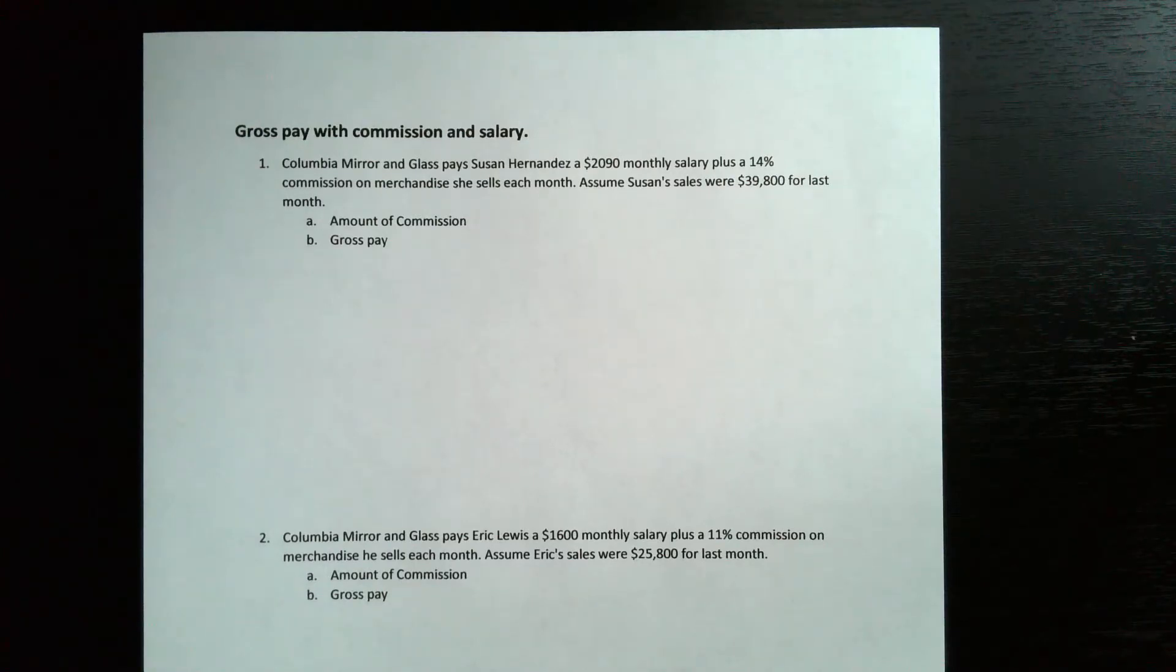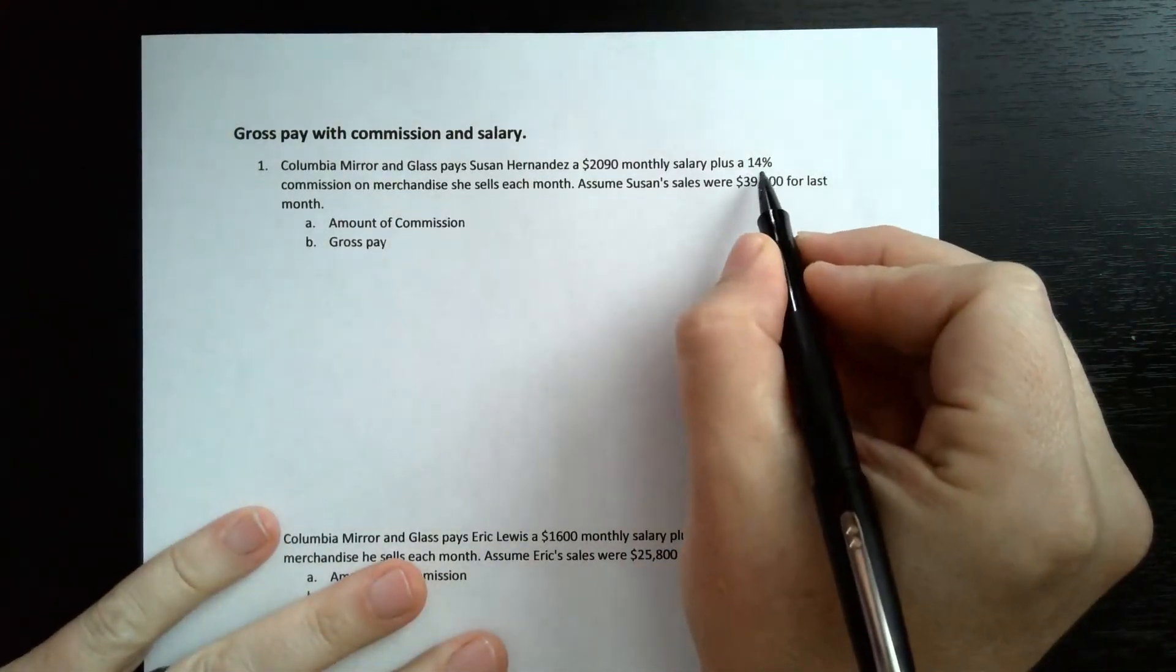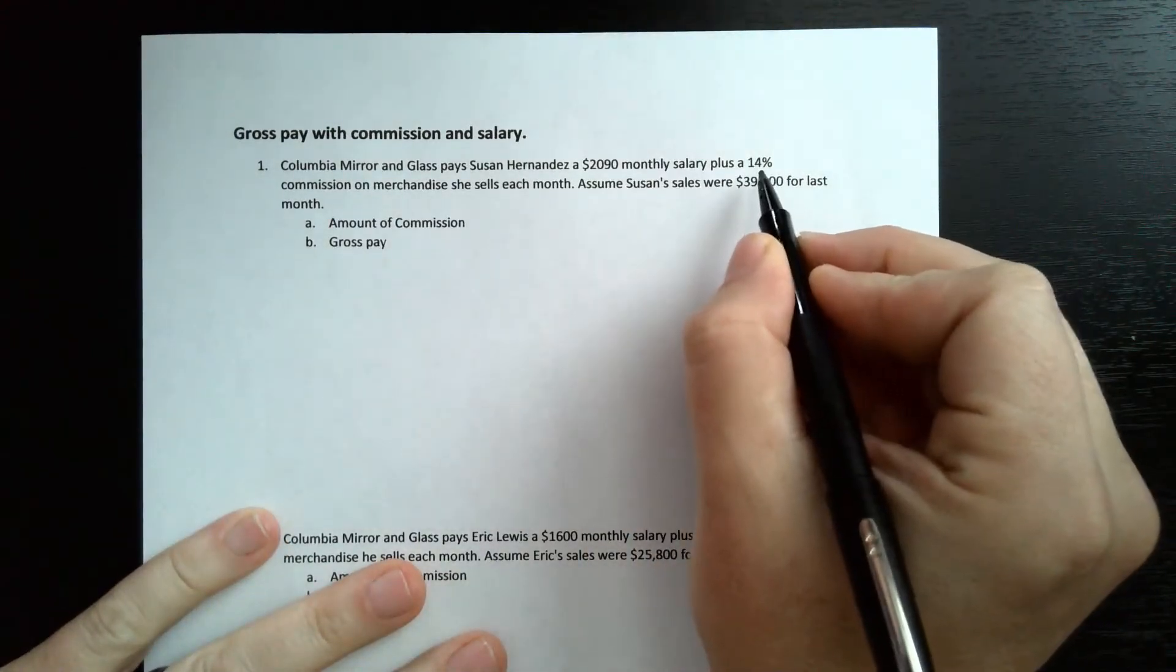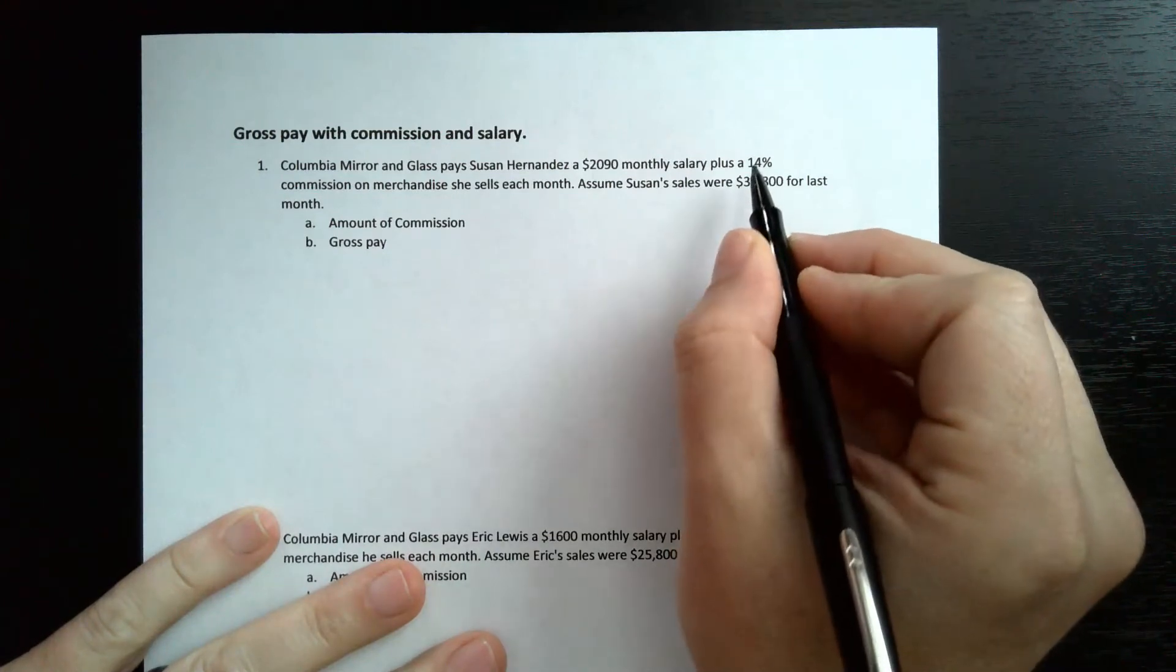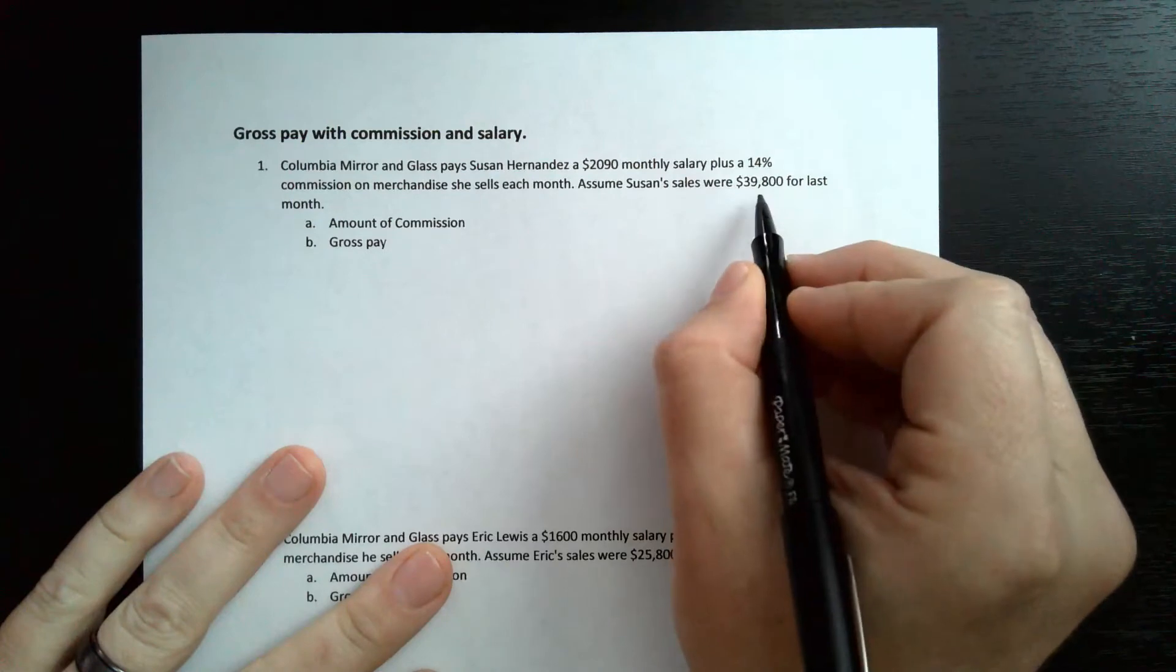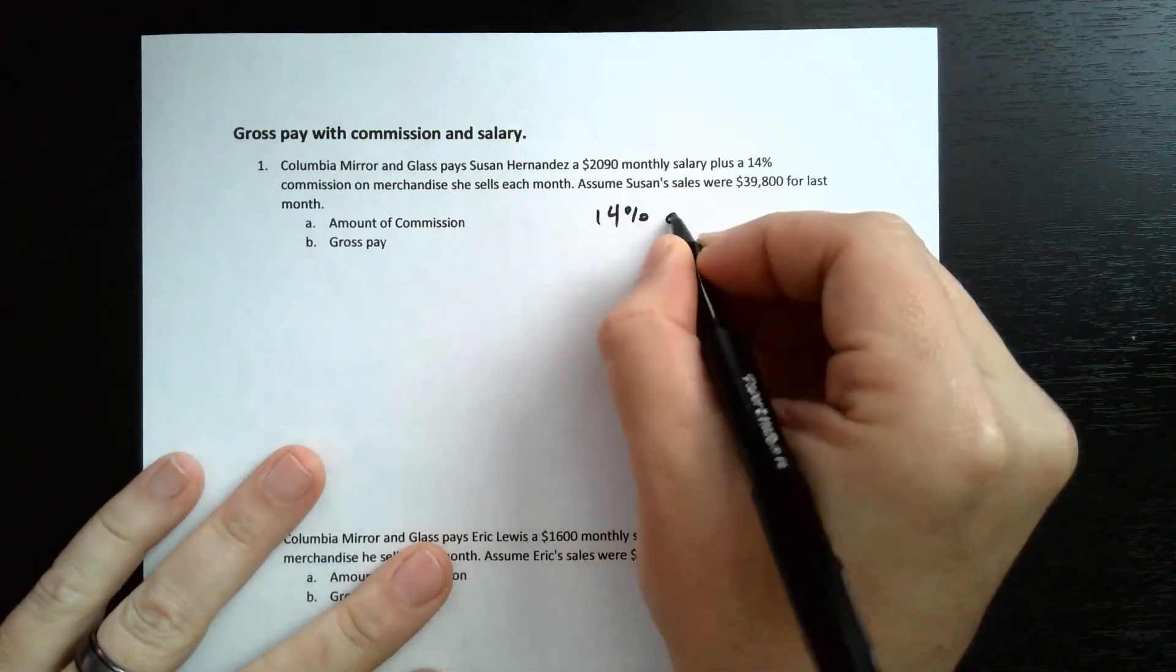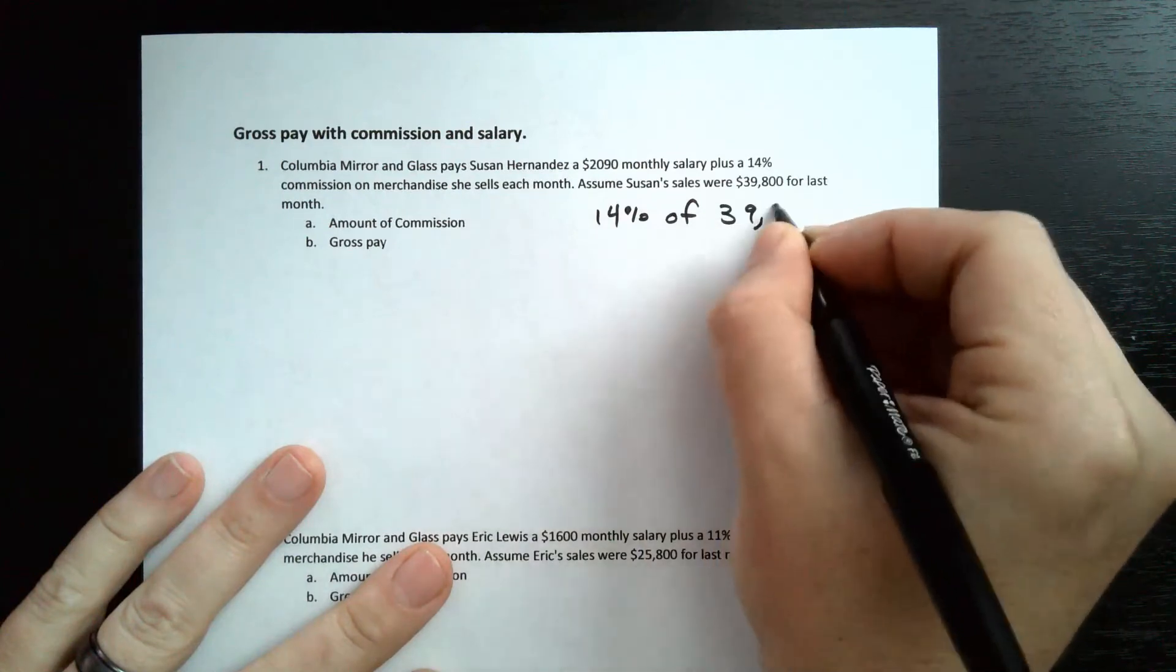We need to figure out how much she made on commission and how much she made on gross pay, which is all the money that she made that month. Let's figure out the commission. We know that Susan gets 14% of this number. So 14% commission on this. So it would be 14% of $39,800.